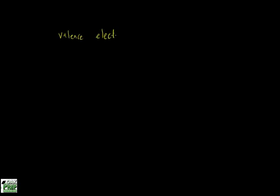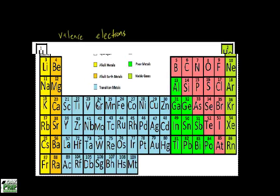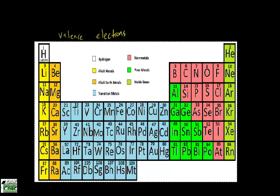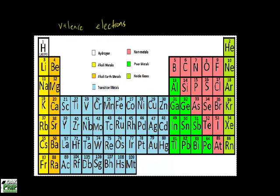In this video we'll talk about valence electrons and what they are. Before we define this, let's look at the periodic table and see how this relates to it. The number on top of each element — like 3, 4, 6, or 7 — is the atomic number of that element. The atomic number is equal to the number of protons, and also the number of electrons if there is no charge.